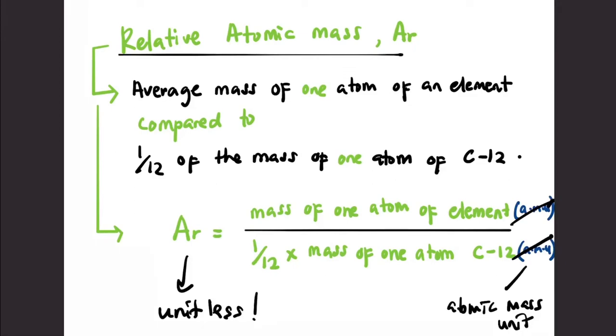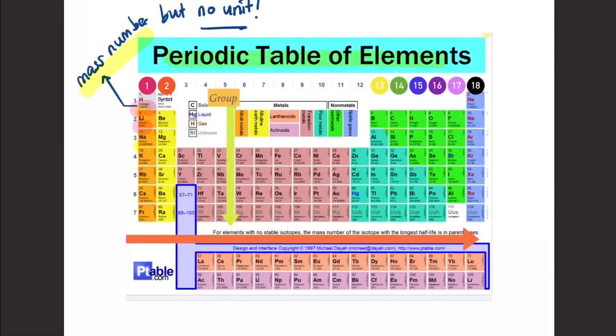We can basically get the relative atomic mass of an element from the periodic table of elements, because each element has its mass number written. We just need to remove the unit.